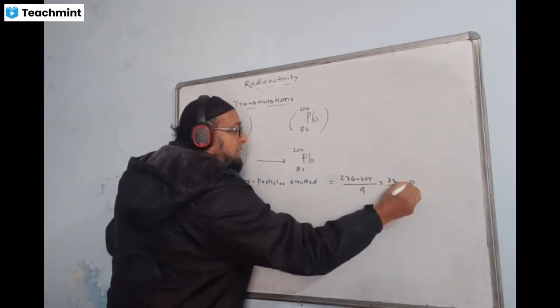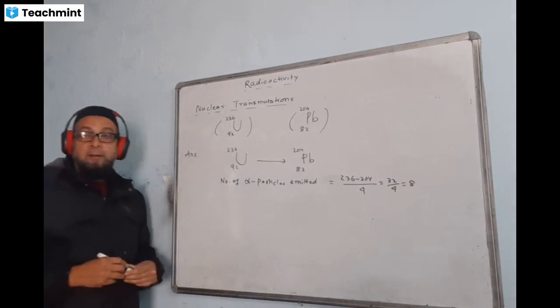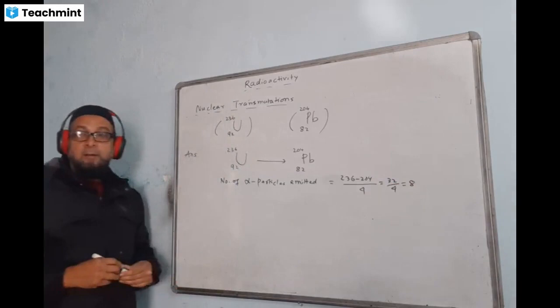This difference divided by 4, one alpha particle the difference is how much? By 4, what is the answer? 8.